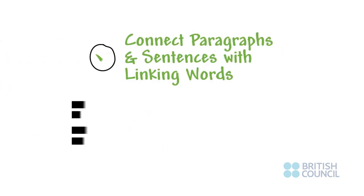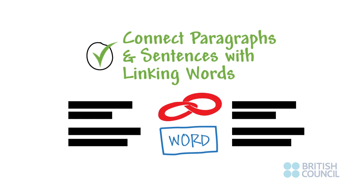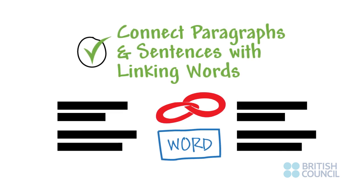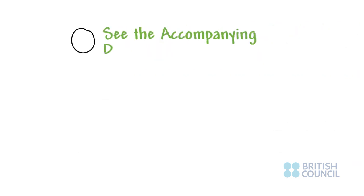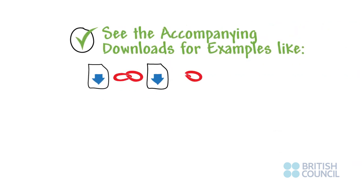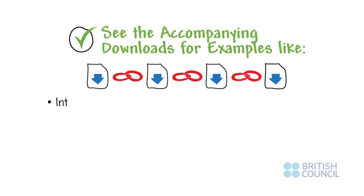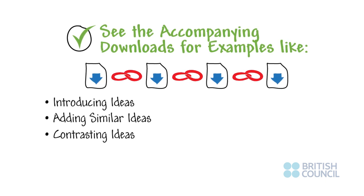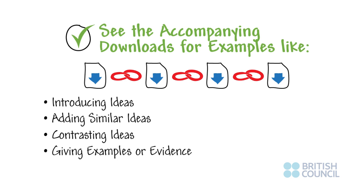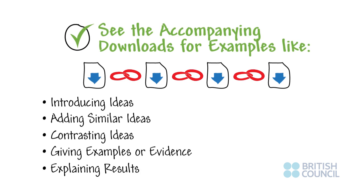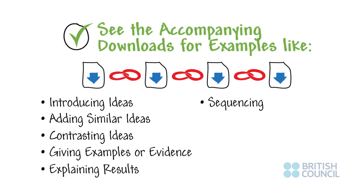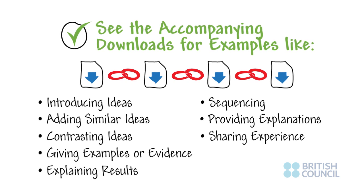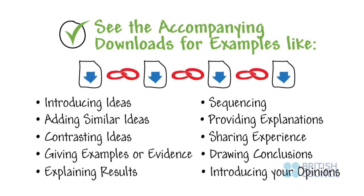Connect and show the relationship between your paragraphs and sentences by using a wide range of linking words or phrases appropriately. See our accompanying download for different examples. They are usually these types: introducing ideas, adding similar ideas, contrasting ideas, giving examples or evidence, explaining results, sequencing, providing explanations, sharing your experience, drawing conclusions, and introducing your opinions.